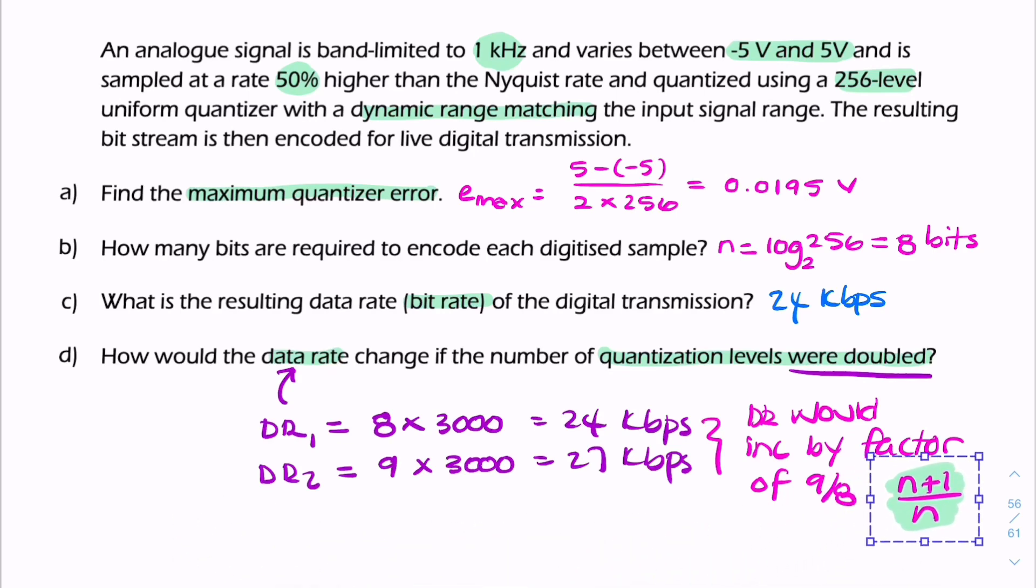And more generally, we could say it would increase by a factor of N plus 1 over N. So 9 over 8 is a specific example given in this question. But in general, if you double the number of quantization levels, the data rate would increase by a factor of N plus 1 over N. And that's your final answer.